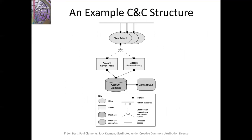Here's an example component connector structure using an informal notation described in the key. The system has a shared repository — an account database — accessed by a couple of servers as well as an administrative component. Up here we have a set of banking tellers who can interact with the servers and communicate among themselves using a publish-subscribe connector as described.